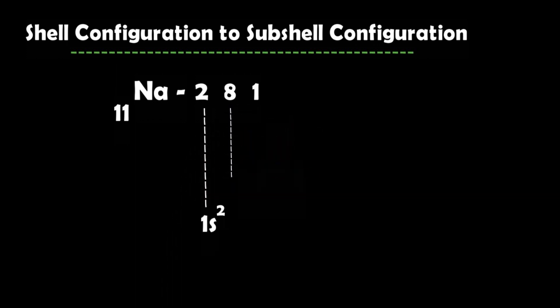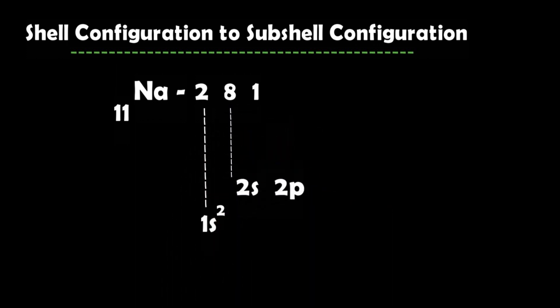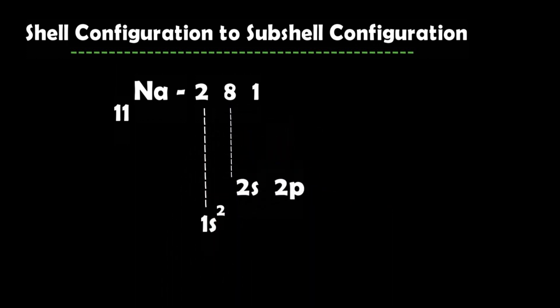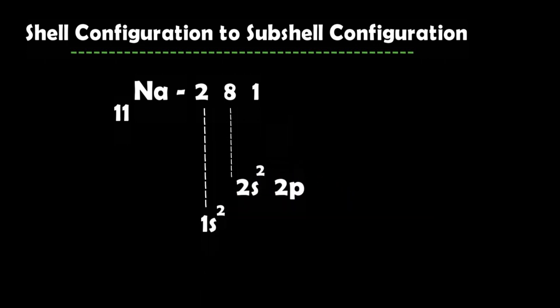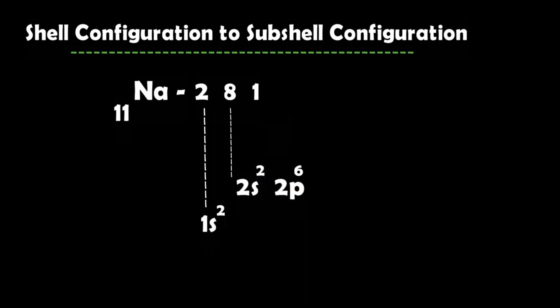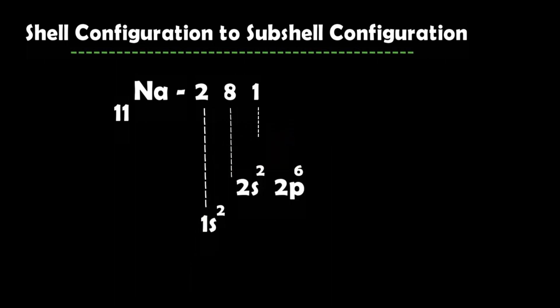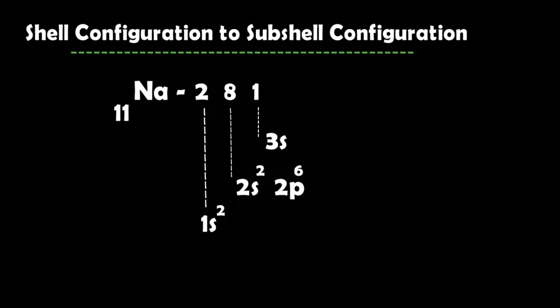We have to do 1s2, 2s2, 2p6, 3s1. We have to do the sub-shell configuration. The sub-shell configuration is split — that is 2 and 6.